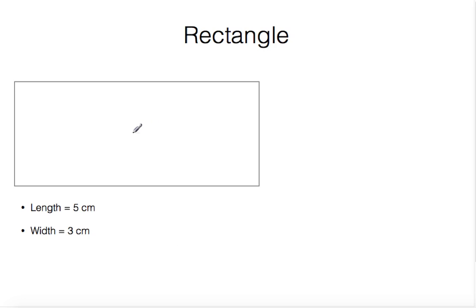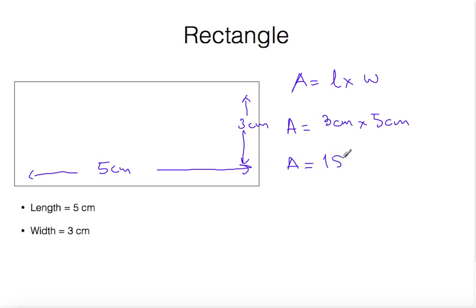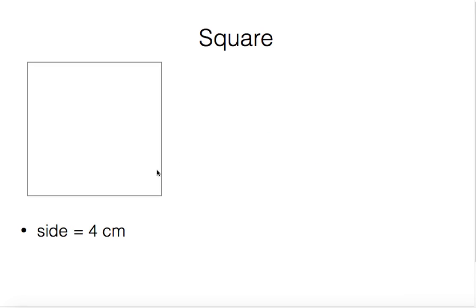Now let's calculate the area of a rectangle. The length is given as five centimeters and the width is given as three centimeters. Area equals length times width, so three centimeters times five centimeters gives an area of 15 centimeters squared.